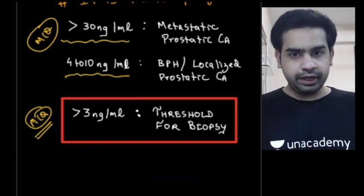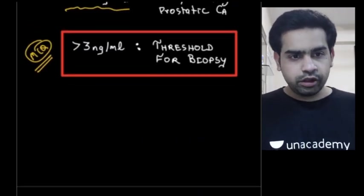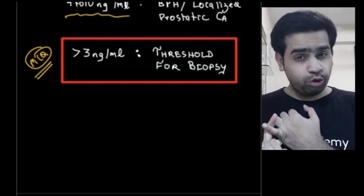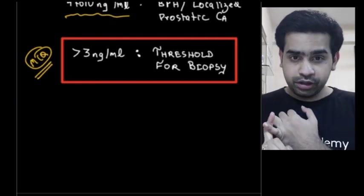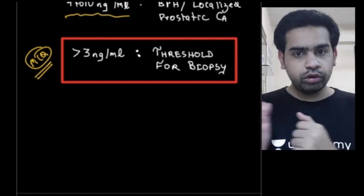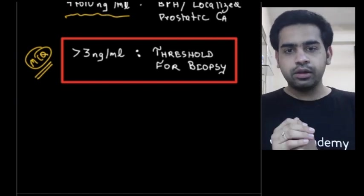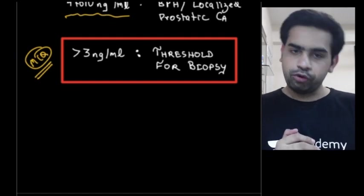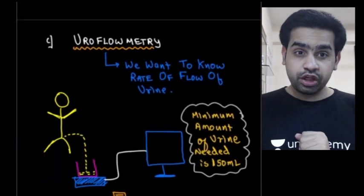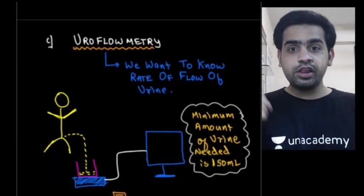There are two methods of biopsy: TRUS-guided biopsy (transrectal ultrasound guided biopsy) and perineal biopsy. Perineal biopsy is gaining importance, but currently the investigation of choice remains TRUS-guided biopsy. The threshold for prostatic biopsy is 3 nanograms per ml — if PSA exceeds this, advise a prostatic biopsy to rule out carcinoma.